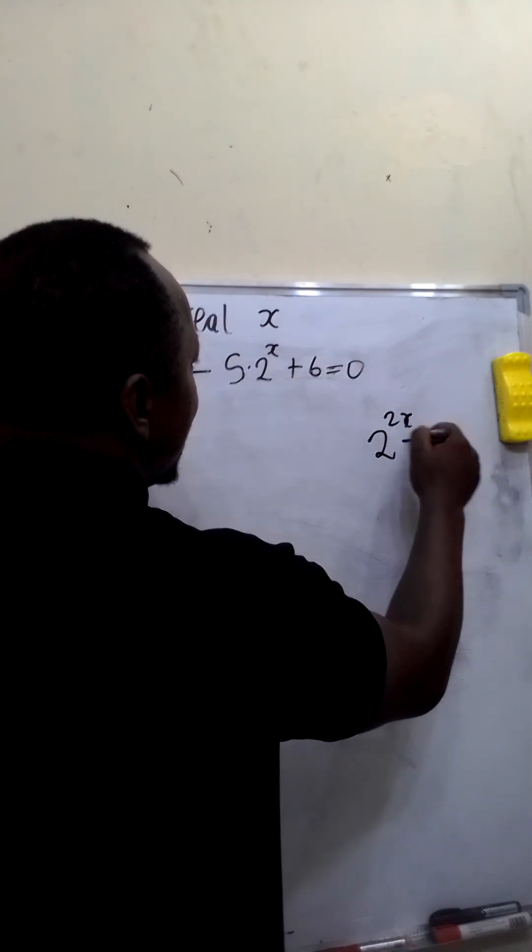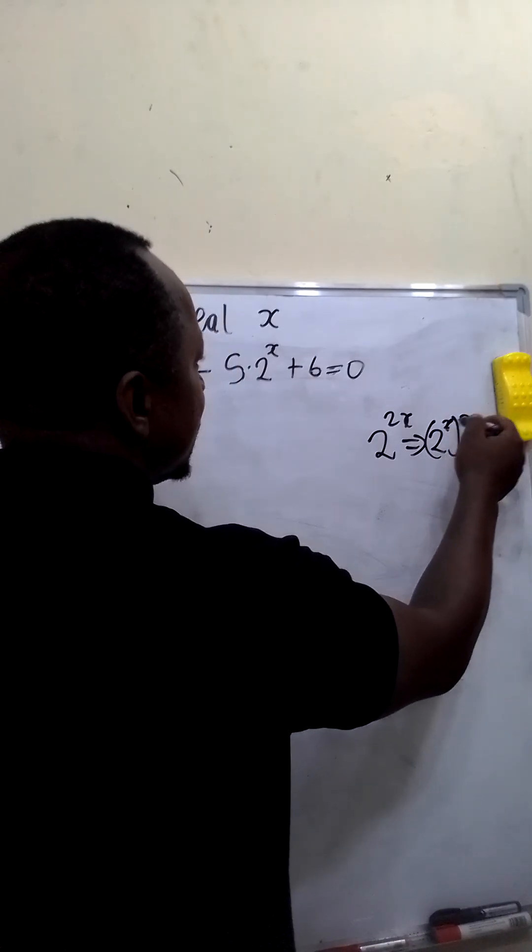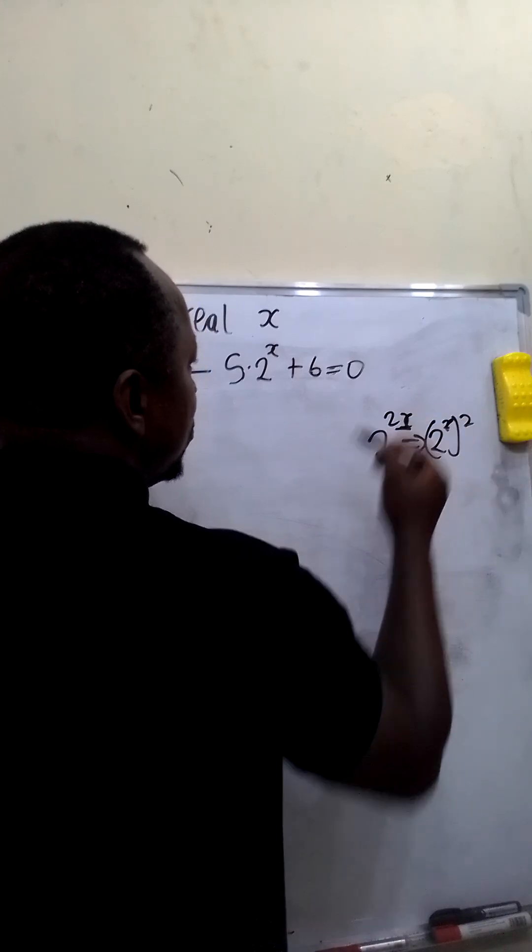2 raised to the power 2x can be expressed as 2 raised to the power x bracket 2. x times 2 will give us 2x.